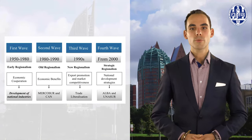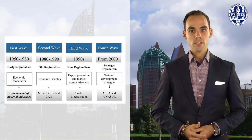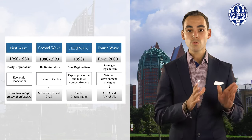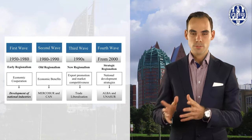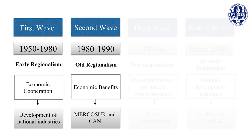The literature on the history of Latin American integration is unwieldy. In general, recent Latin America's regional integration dynamics are grouped into four different waves, visualized in this figure. The first wave, from 1950 to 1980, is called Early Regionalism and focuses on the potential for economic cooperation as a means for the development of national industries. The second wave, from 1980 to 1990, is called Old Regionalism and puts the focus more on the economic benefits of regional integration systems rather than just economic cooperation.